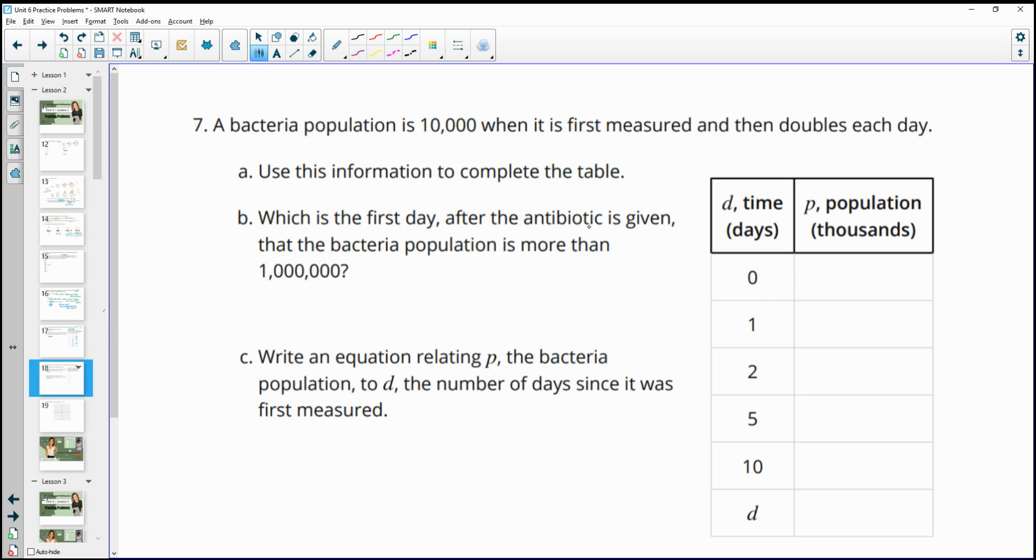Number seven, a bacteria population is 10,000 when it's first measured and then doubles each day. Use this information to complete the table. Notice that this says it's in thousands. So the original population was 10,000. So we're going to just put a 10 here. And then if that doubles, it will be at 20. Doubles again will be at 40. Then be careful because this jumps to five. So we're going to double it again to 80 and then to 160 and then to 320. And then you're going to need to double it five more times to get to 640 and then 1,280, 2,560, 5,120. And then ultimately to 10,240 at this one. So you just keep doubling that five more times.